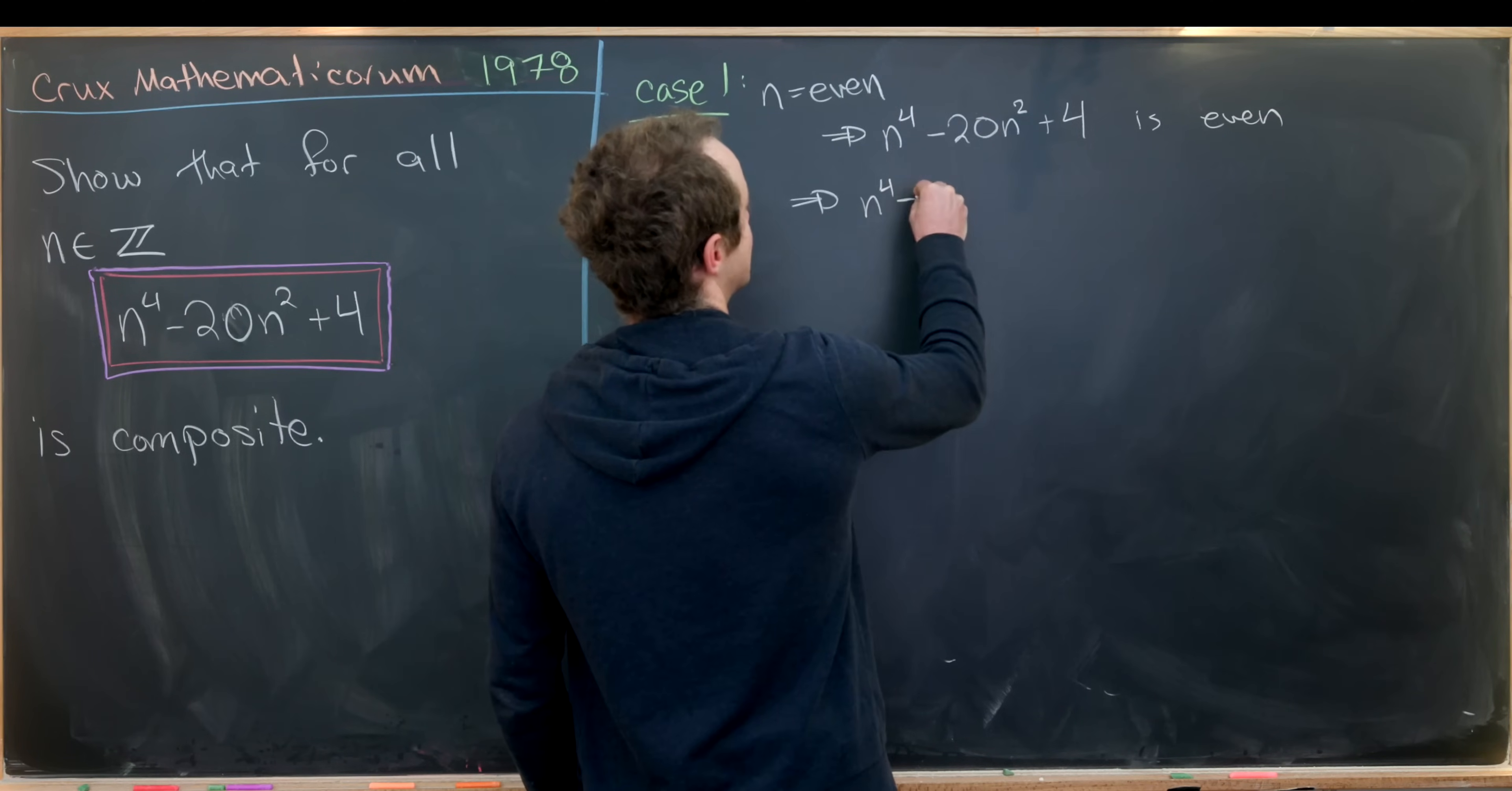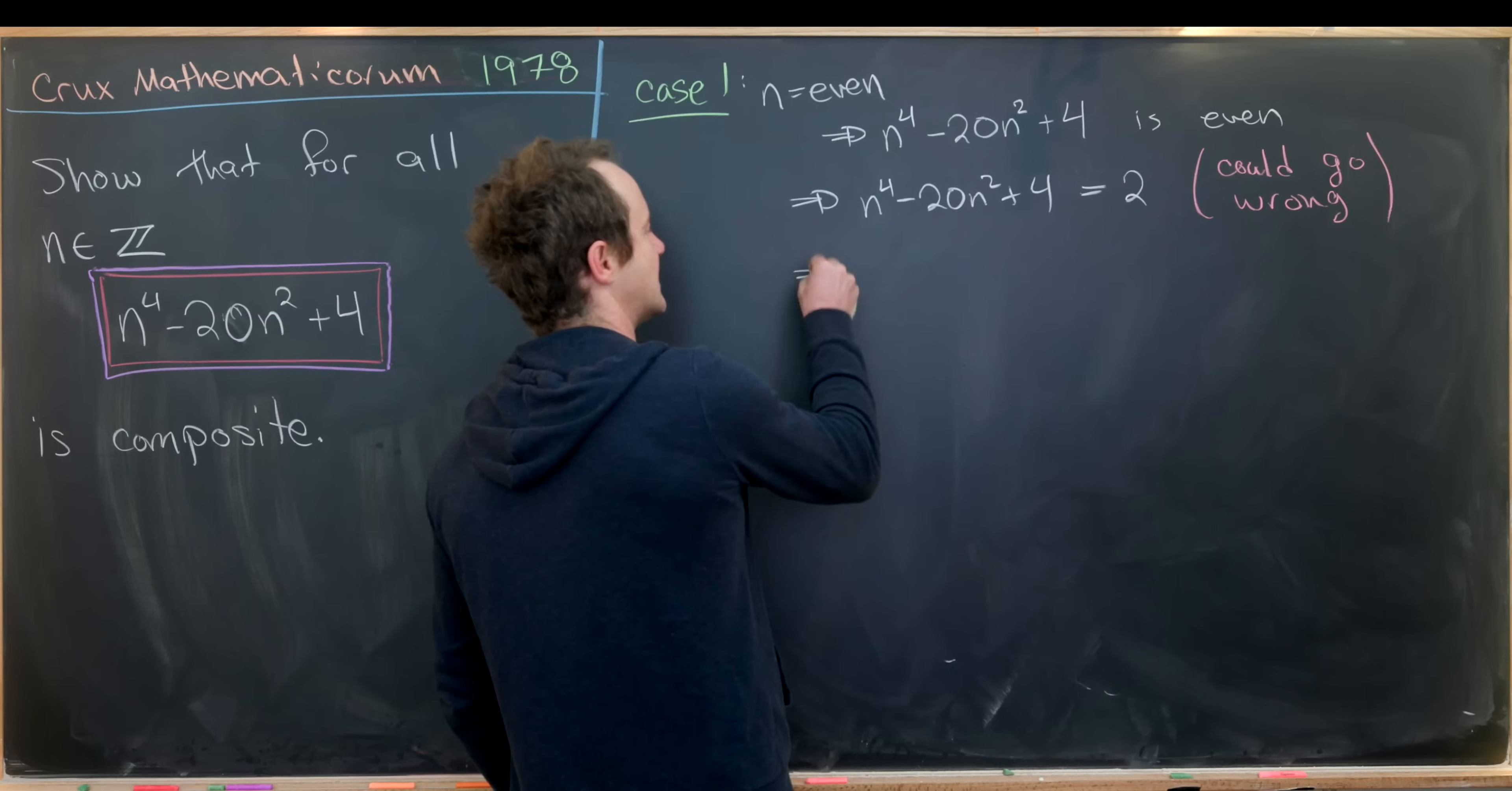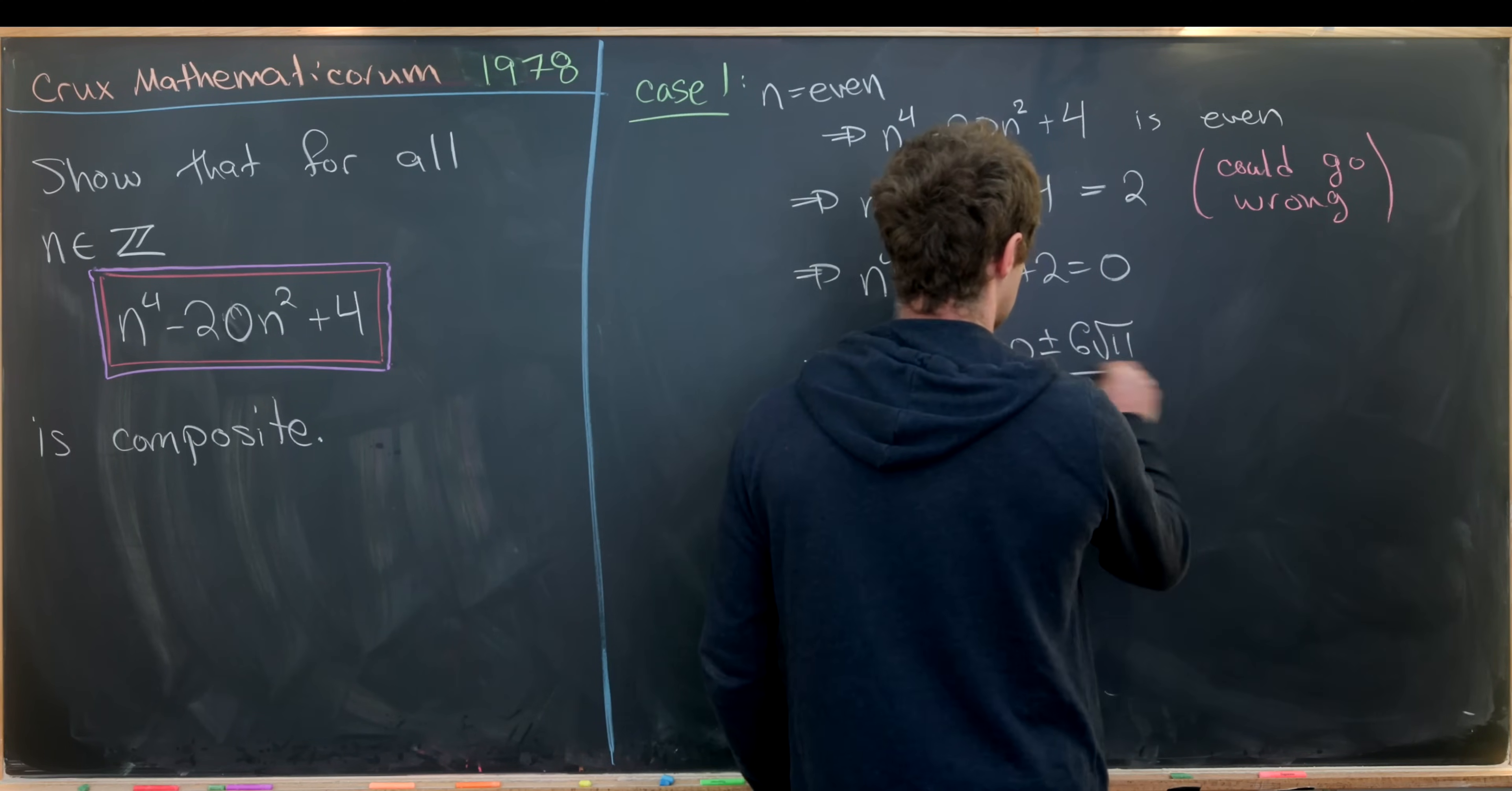So that means we have n to the fourth minus 20n squared plus 4 equals 2. This is the only thing that could go wrong. We want to show that this equation is impossible. Notice we can rewrite this as n to the fourth minus 20n squared plus 2 equals 0, which is a standard quadratic equation in the variable n squared. You can solve this for n squared and you'll get 400 plus or minus 6 times the square root of 11 over 2, using the quadratic formula.